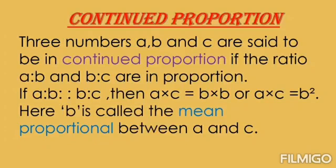The next topic is continued proportion. Three numbers A, B and C are said to be in proportion if the ratio A:B and B:C are in proportion. If they are in proportion, then A × C = B × B, or A × C = B². Here B is called the mean proportional between A and C. Up to here we have completed before the examination.